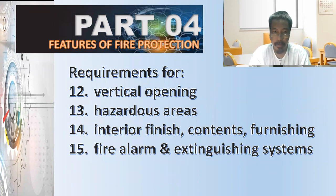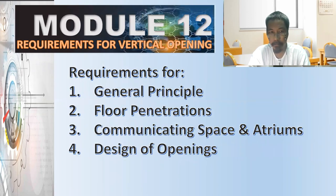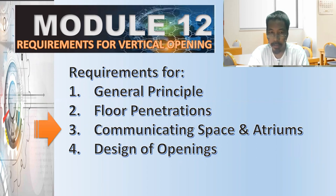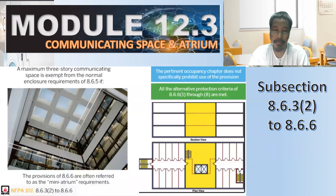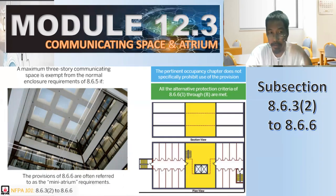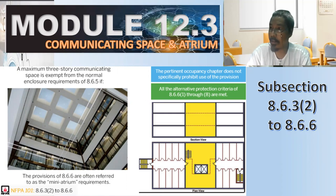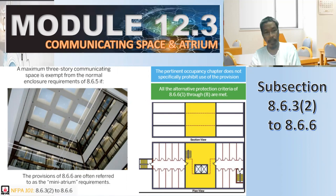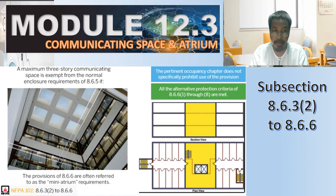So, features of fire protection — we have four major parts and we are currently on module number 12. Under this module, we have four subtopics. We are now going to discuss number three: communicating space and atrium. A maximum three-storey communicating space is exempt from the normal enclosure requirements of 8.6.5. As we can remember, there is a threshold from the last video about four storeys. If the structure is only three-storey, the communicating space is exempt from the requirements for normal enclosure.